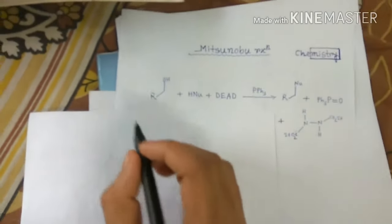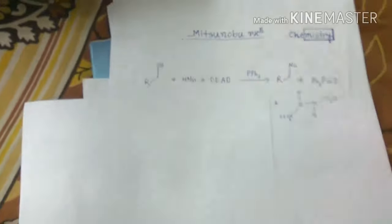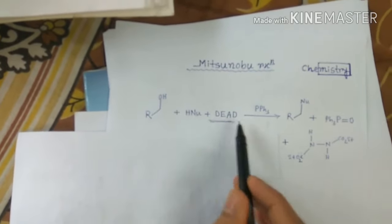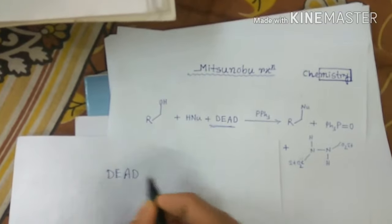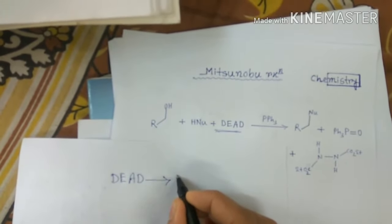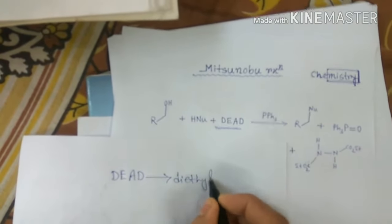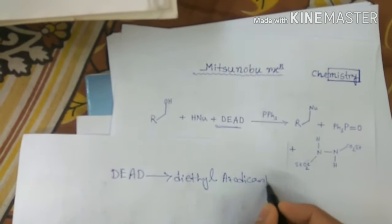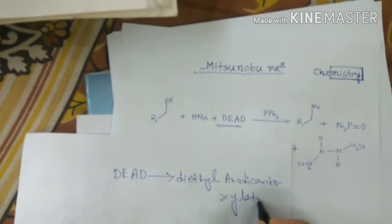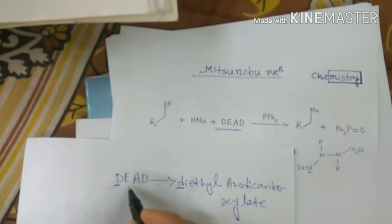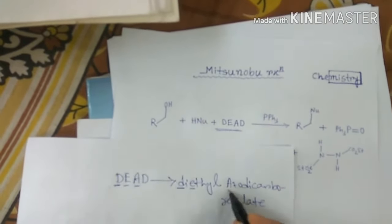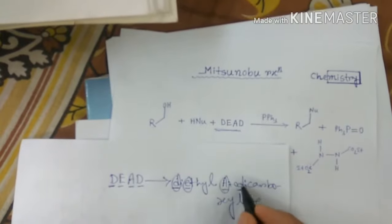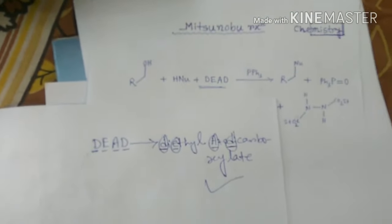Welcome to the Mitsunobu reaction. To understand this, we should be familiar with some terms. What is DEAD? DEAD stands for diethyl azodicarboxylate. So D for diethyl, E for this E, A for azo, and D for dicarboxylate — diethyl azodicarboxylate is the full form of DEAD.